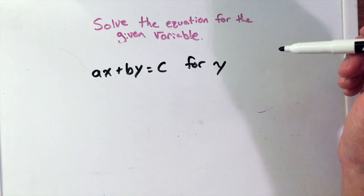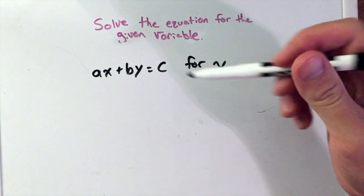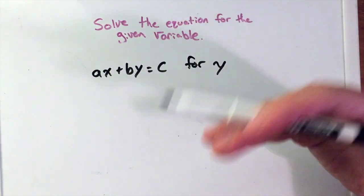This one's a little tricky because we don't have any numbers here. We're dealing with a lot of different variables. We don't know what a, b, and c are. We don't know what x and y are. We just have to deal with it as such.